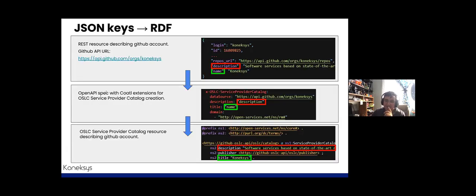Regarding the previous example, it is possible to extract the attributes 'name' and 'description' from the REST resource of the GitHub API, document them into the OpenAPI file, and specify that these attributes will be used as the title and description of the OSLC service provider catalog — finally exposing these attributes correctly in the generated OSLC resource.